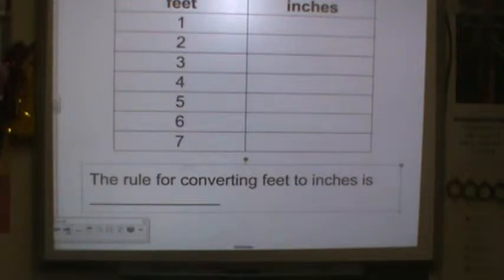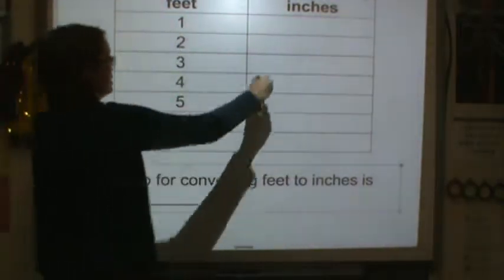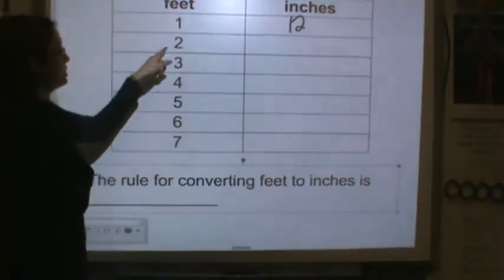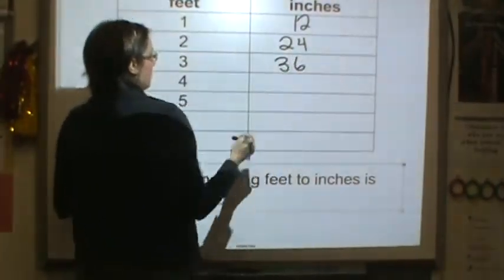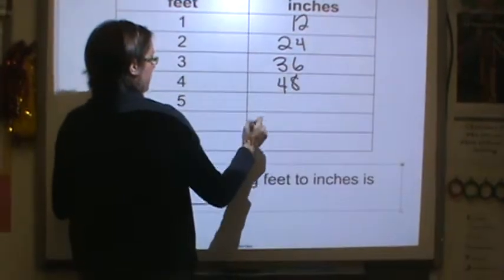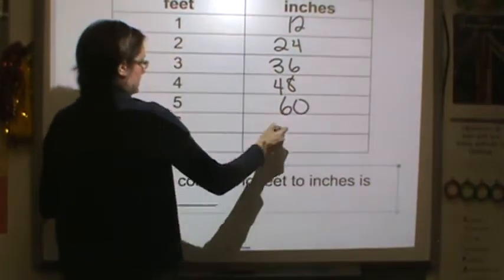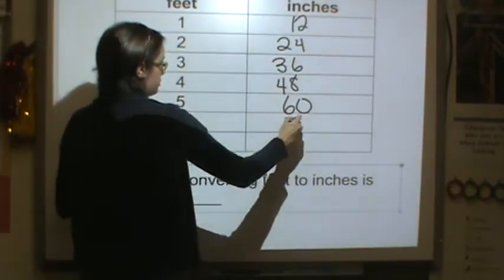Feet to inches. So in your notes one foot is 12 inches, two feet 24 inches, three feet 36, four feet 48, five feet 60, six feet equals 72.